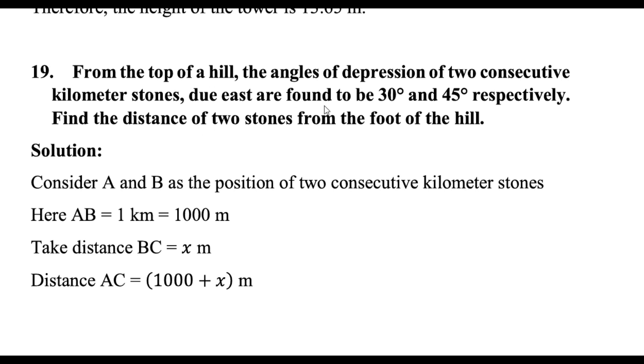From the top of a hill, the angles of depression of two consecutive kilometer stones due east are found to be 30 degrees and 45 degrees respectively. Find the distance of two stones from the foot of the hill.